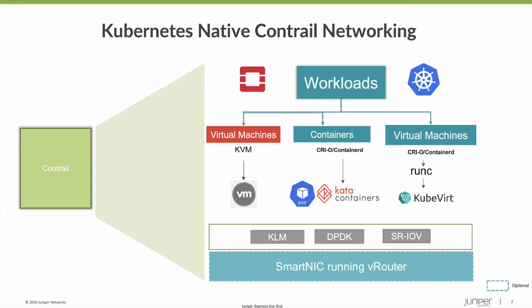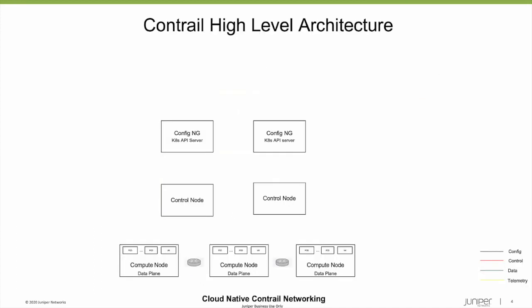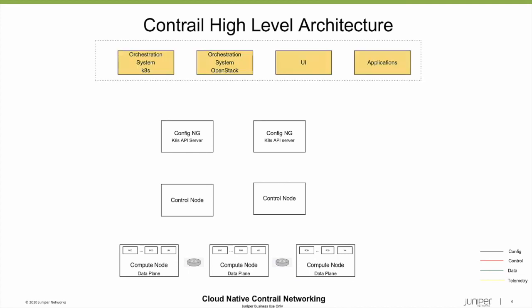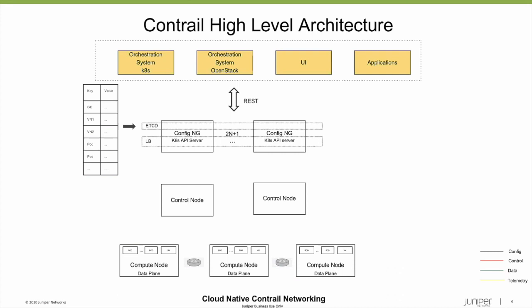We support both orchestrators, Kubernetes as well as OpenStack. Contrail is an SDN platform consisting of three planes: config plane, control plane, and data plane. The config plane consists of multiple config nodes, and they are highly available by 2N plus 1 config nodes. Similarly, control nodes are also highly available. Config nodes take the REST configuration from the orchestrators or UI and store this configuration at the etcd data store, a key-value data store.